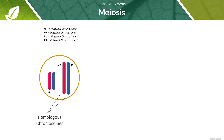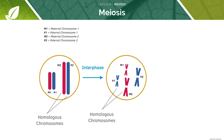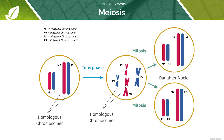One copy is maternal and the other copy is paternal. In interphase, each of the chromosomes will duplicate. Every chromosome will turn into a pair of chromatids. There are two P1 chromosomes, two M1 chromosomes, two P2 chromosomes, and two M2 chromosomes. Next, the cell divides during mitosis, and each daughter cell gets one P1, one M1, one P2, and one M2 chromosome.